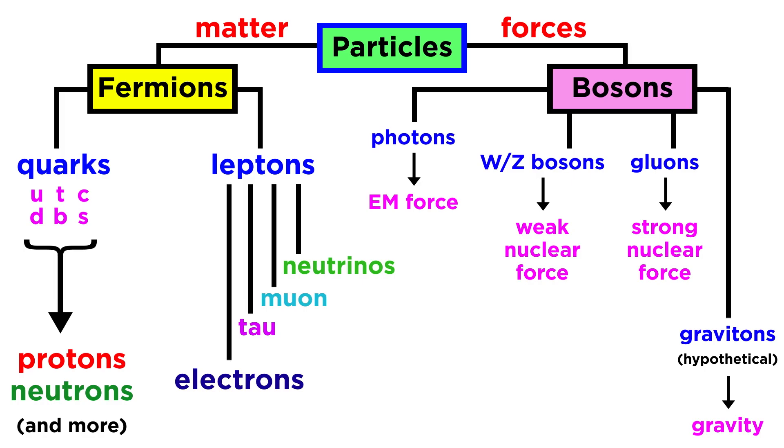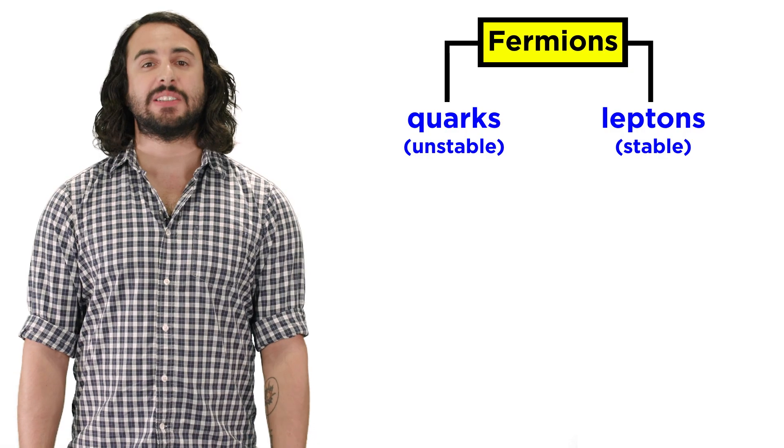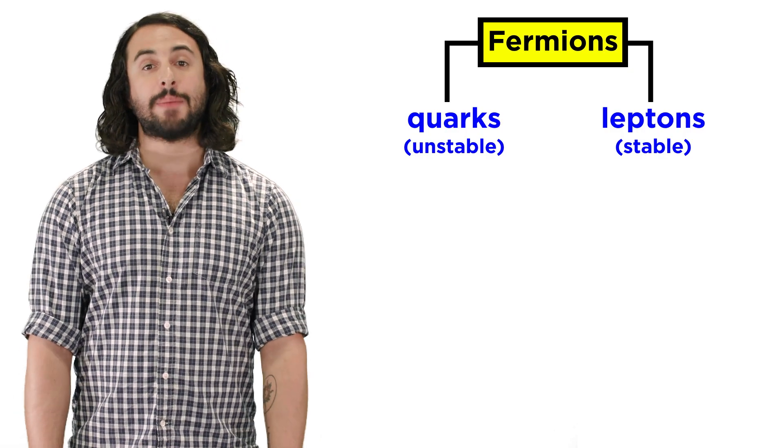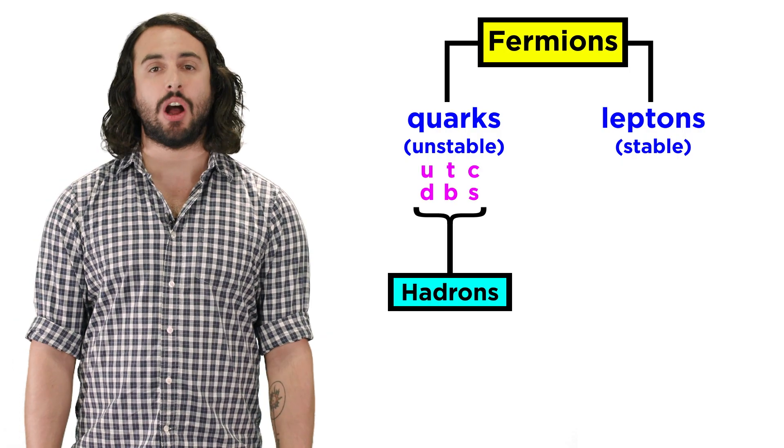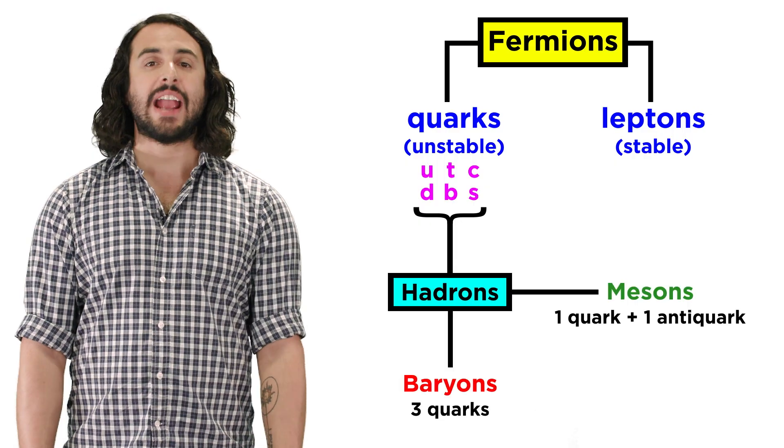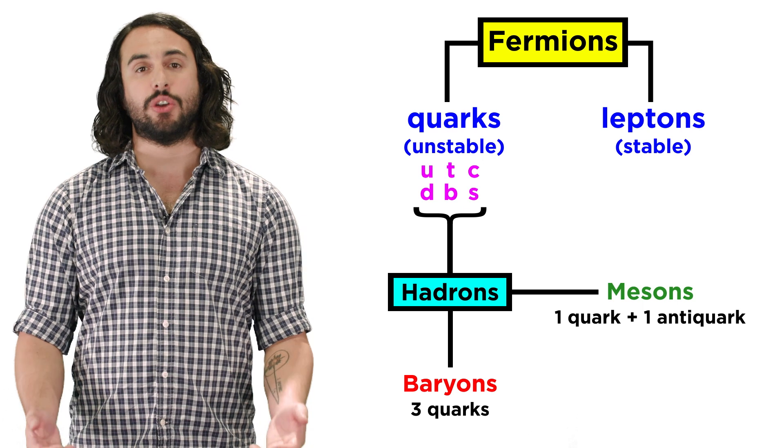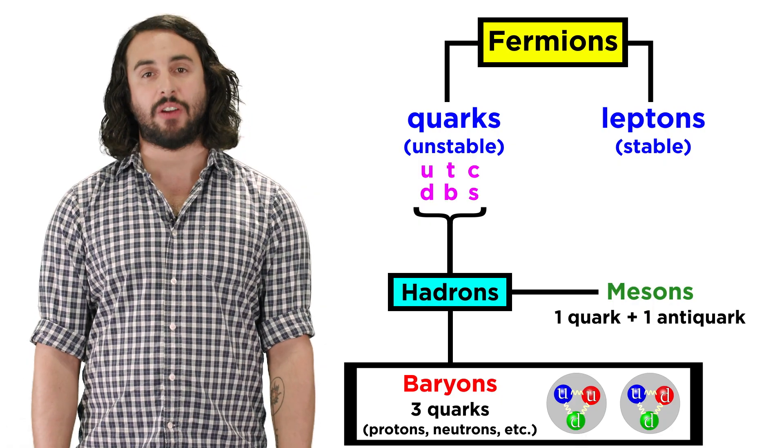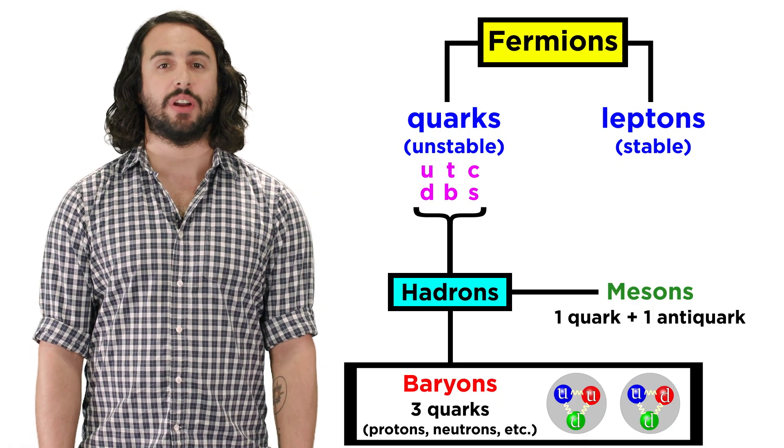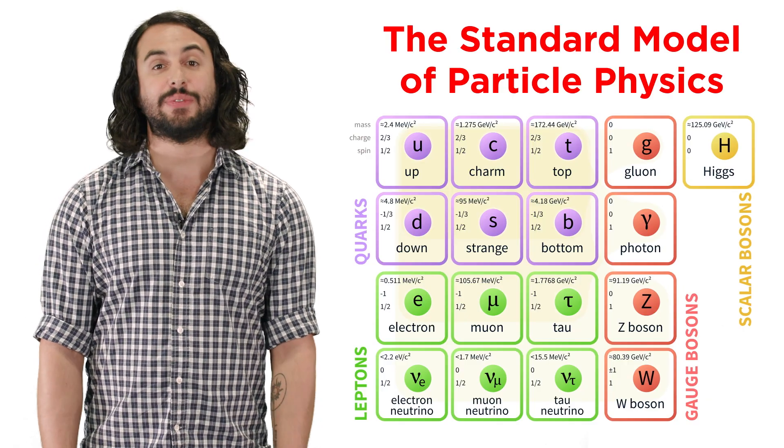So once again we've got fermions, the particles that don't mediate forces, and bosons, the ones that do. Fermions can be split up into quarks and leptons. Leptons are stable by themselves, but quarks are not, so quarks combine to make other particles called hadrons. Hadrons themselves can be split up into mesons and baryons, the latter being the nucleons we are familiar with. Protons and neutrons are examples of baryons, but there are many more given all the possible combinations of three quarks.